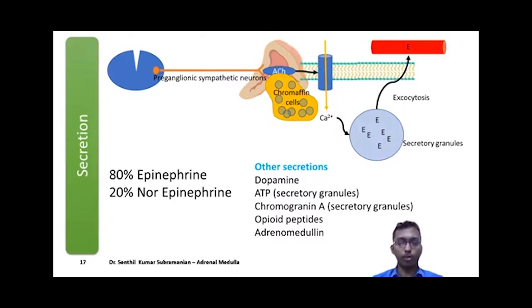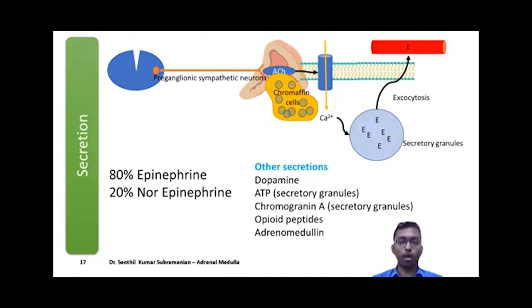80% of chromaffin cells secrete epinephrine, while 20% secrete norepinephrine. Other secretions found in the adrenal medulla include dopamine, ATP, chromogranin A, opiate peptides such as metenkephalins, and adrenomedullin. The amount of dopamine secreted from the adrenal medulla is very small.